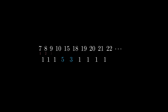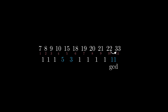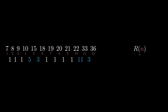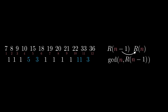To recap, the sequence is defined by the following rule. Index the numbers starting from 1. To get the number at index n, determine the greatest common divisor of n and the previous number. This GCD is the next increase. So here, 22 plus 11 is 33. To find the next number, the GCD of 12 and 33 is 3, and 33 plus 3 is 36. If we call the nth number r(n), then r(n) is the previous number r(n−1) plus the GCD of n and r(n−1).